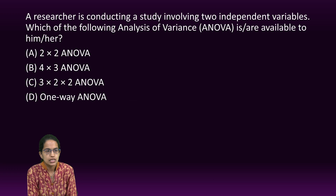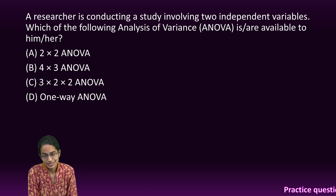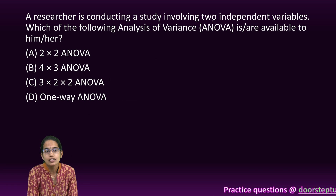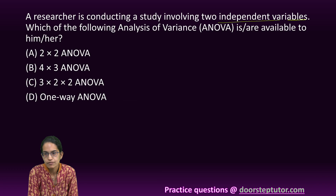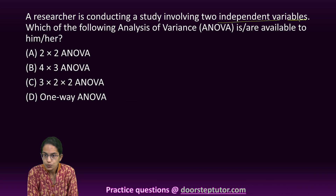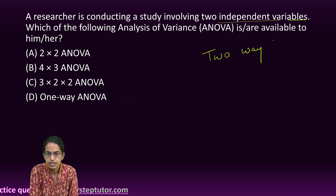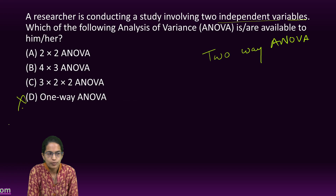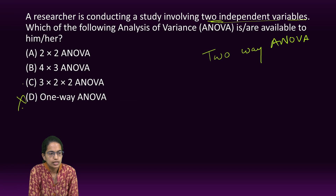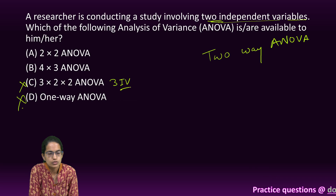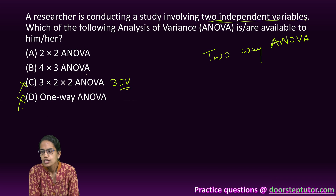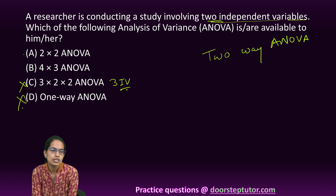The next question involves a researcher studying two independent variables. Since there are two independent variables, it would be a two-way ANOVA. The fourth option is automatically incorrect, and option C involves three independent variables, so that is also incorrect. The only correct options are A and B.